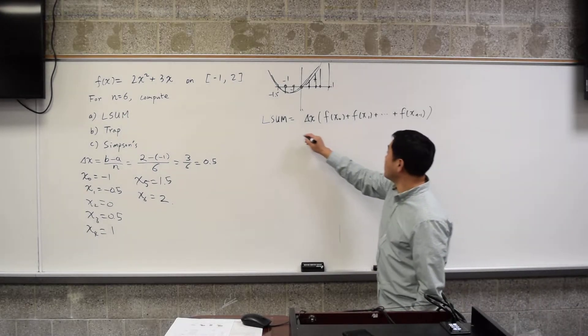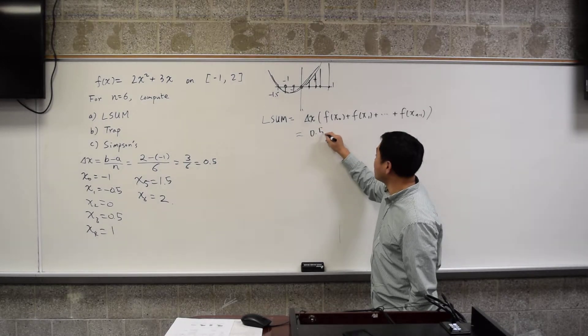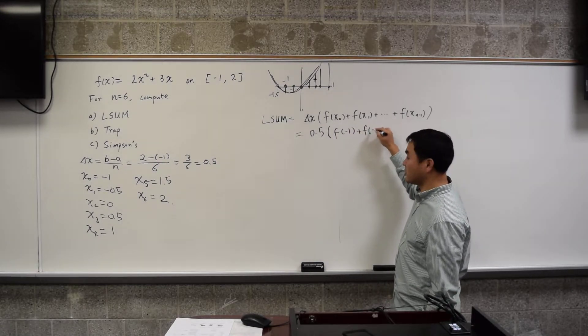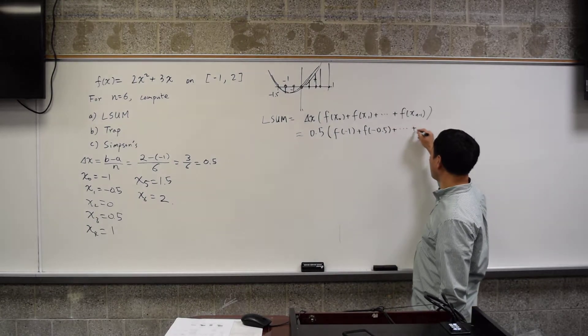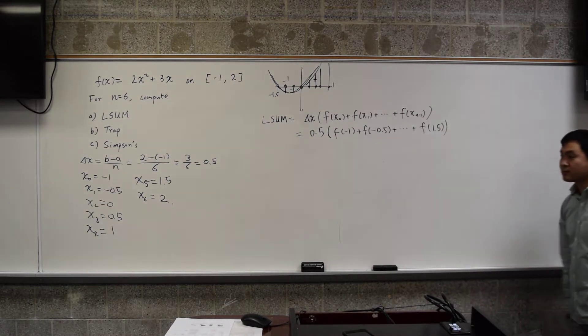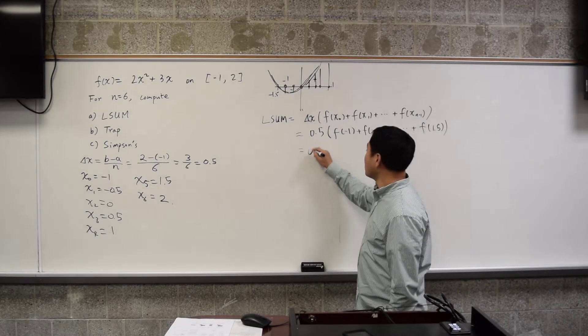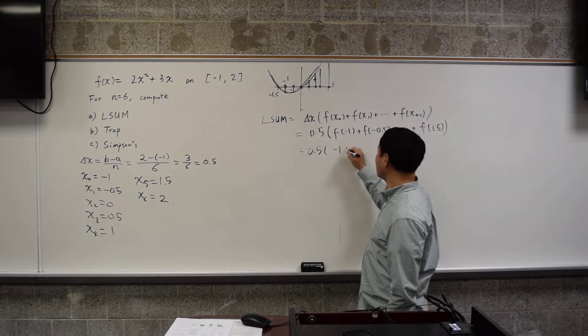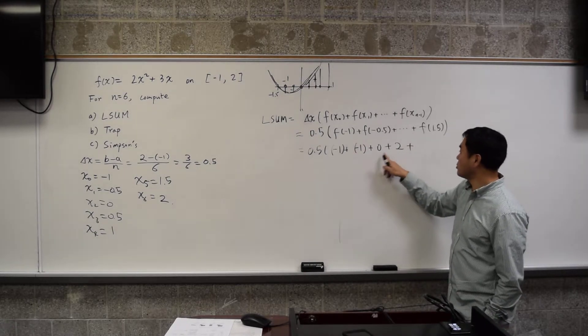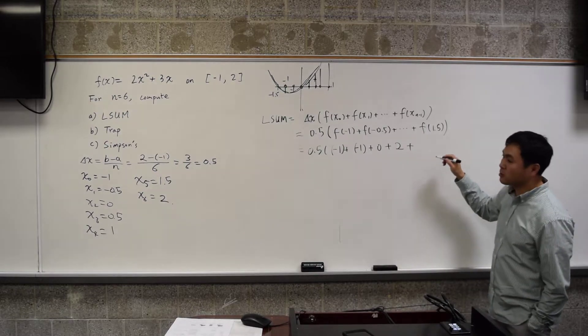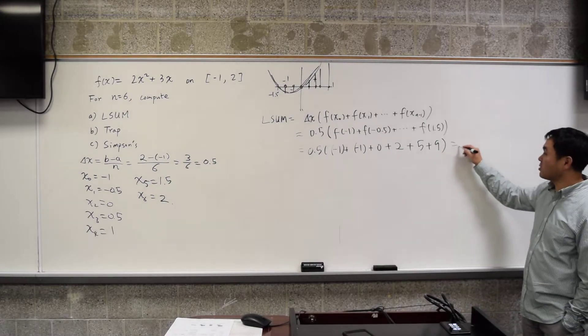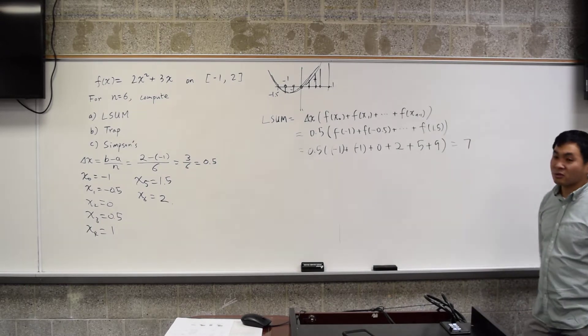All right. You have, therefore, delta x is 0.5 times f evaluated as, so you have f at negative 1 plus f at negative 0.5 all the way up to f at 1.5. Now, if you use your calculator to compute this, you're going to get negative 1 plus negative 1, 0 plus 2 plus... so 0, 1, 2, 3, 4, 5. So 5 plus 9. These will be the values that you get from the calculator and you're going to get 7 as the result of the left sum.